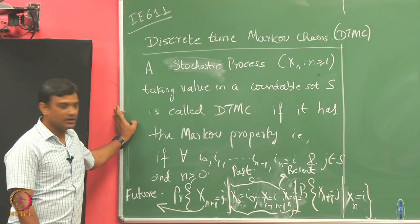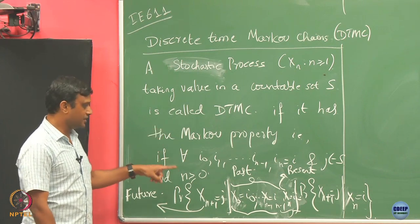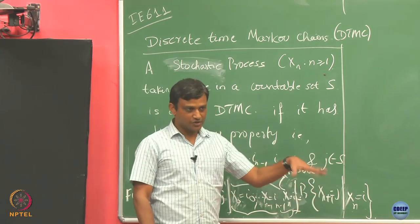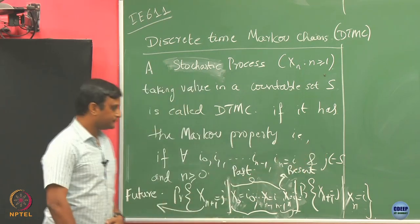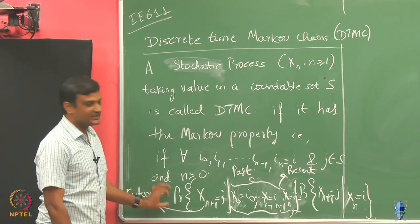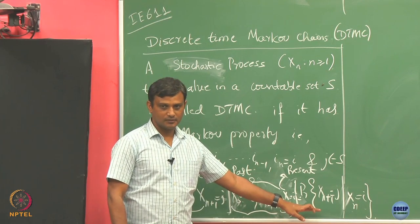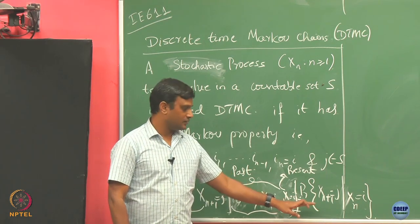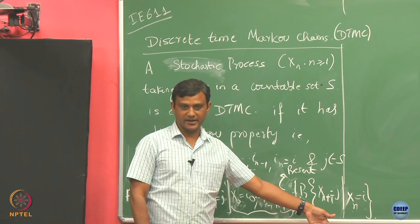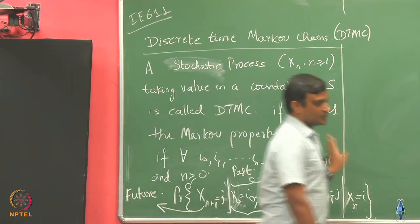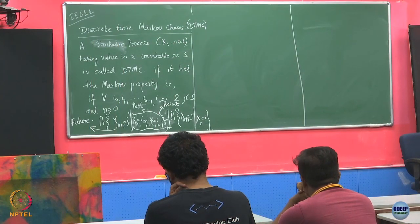This process has some kind of memory — what happens tomorrow depends at least on today. Had it been an IID process, it would be simply P(Xn+1 = j), not even dependent on the present. So when the Markov property holds — the future depends on today but not on further history — we call this a Markov chain.